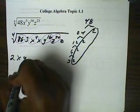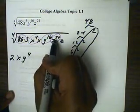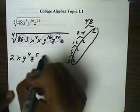Divide the 4th power by 4, we get x, divide the 16 by 4, we get y to the 4th power, and divide 20 by 4, we get z to the 5th power.